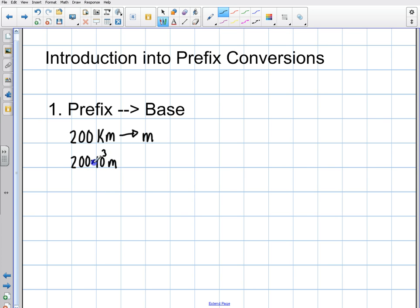So that's just 200 times 10 to the 3 meters. In other words, all you have to do is just substitute wherever you saw that kilo. That's what you substitute because that's what it means. Kilo means 10 to the 3. So you see right here this kilo right here, that means 10 to the 3. That's it.